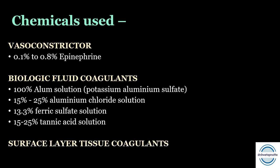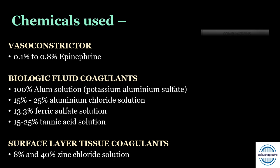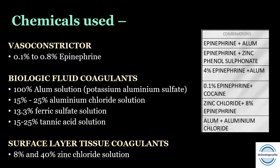Third category is surface layer tissue coagulants — they coagulate the surface layer and form an impermeable film, decreasing seepage. This includes 8% and 40% zinc chloride solution. Commonly, combinations are used: epinephrine with alum, epinephrine with zinc phenol sulfonate, 4% epinephrine with alum, 0.1% epinephrine with cocaine, zinc chloride with 8% epinephrine, and alum with aluminum chloride.